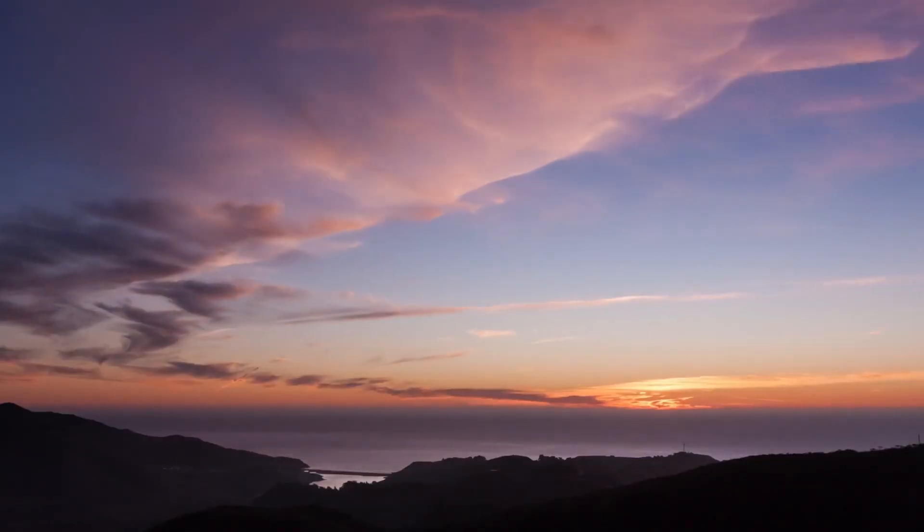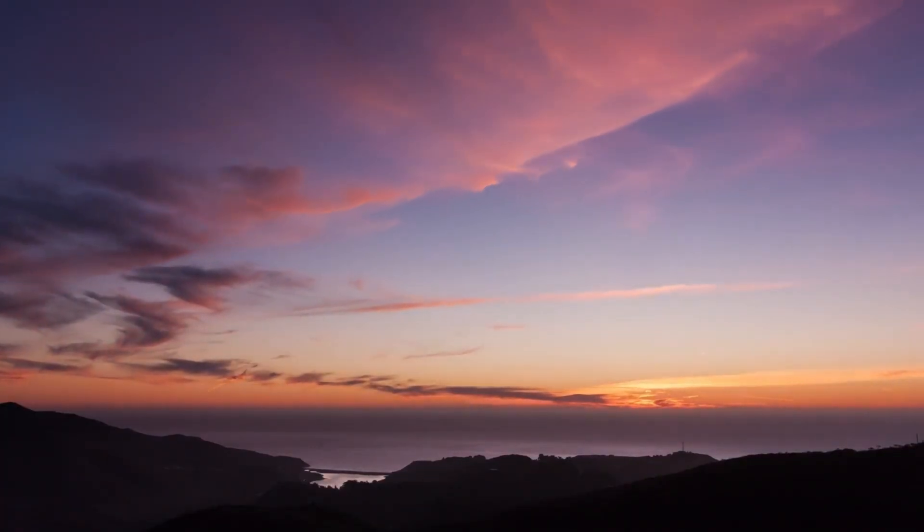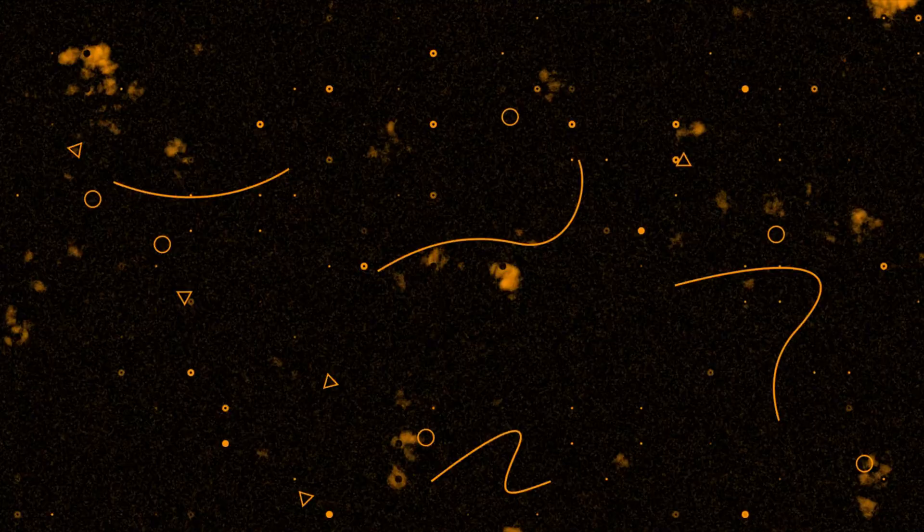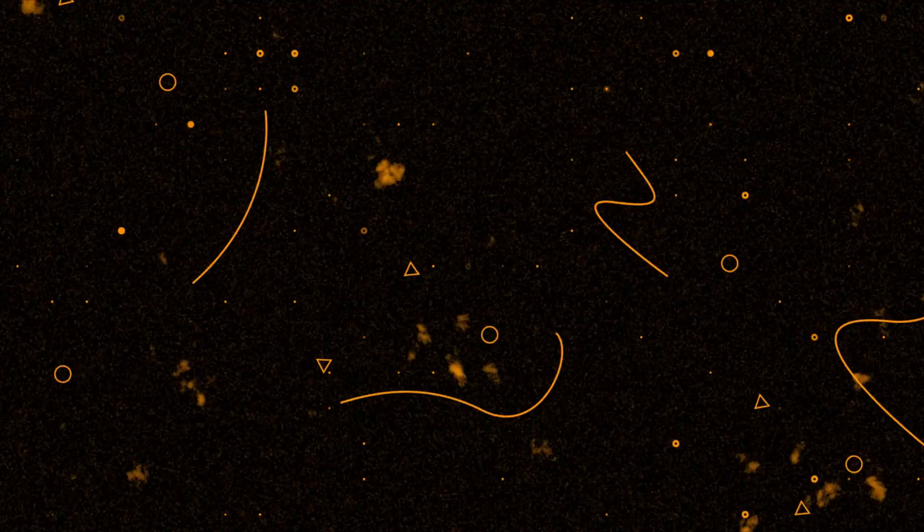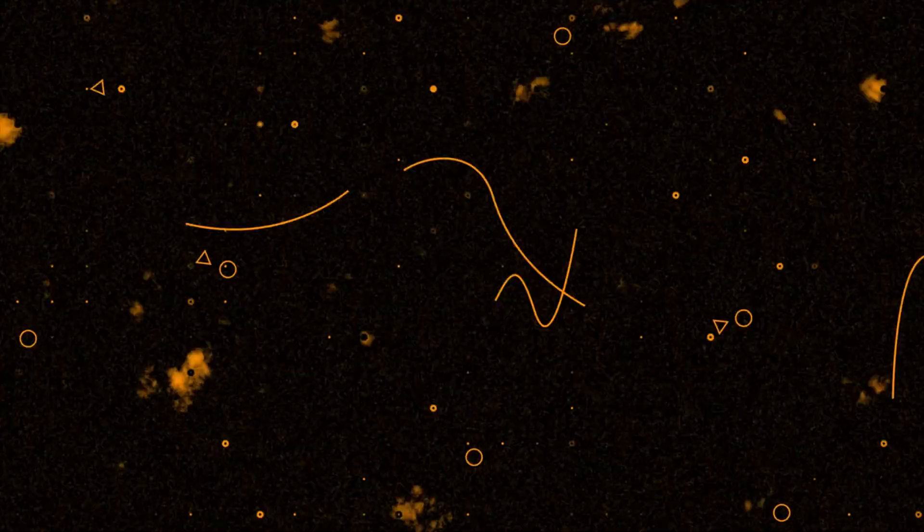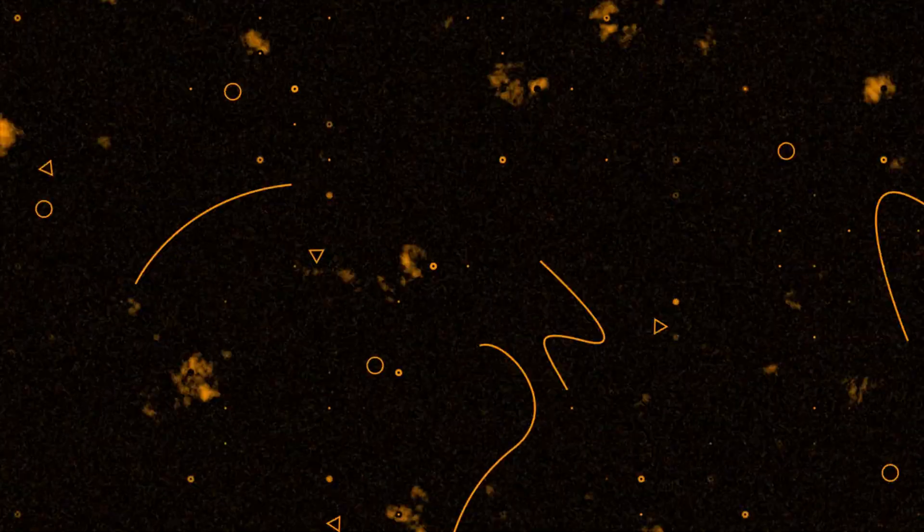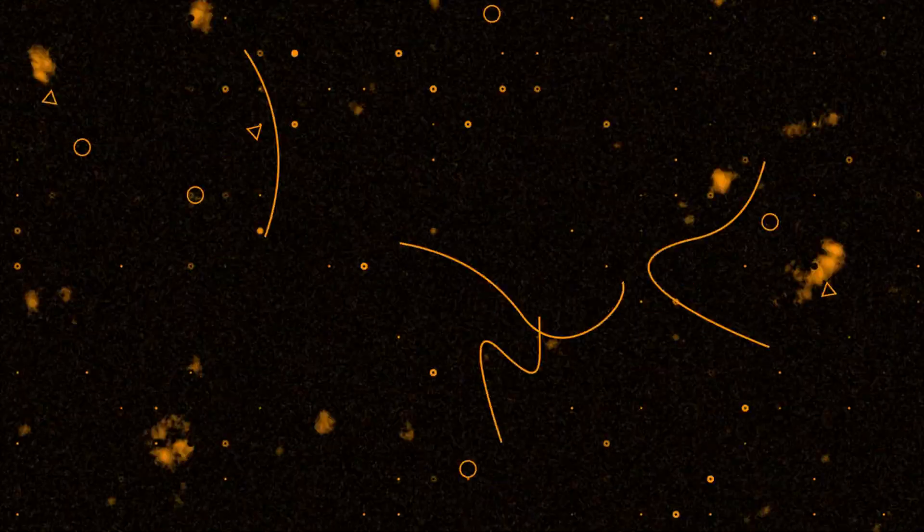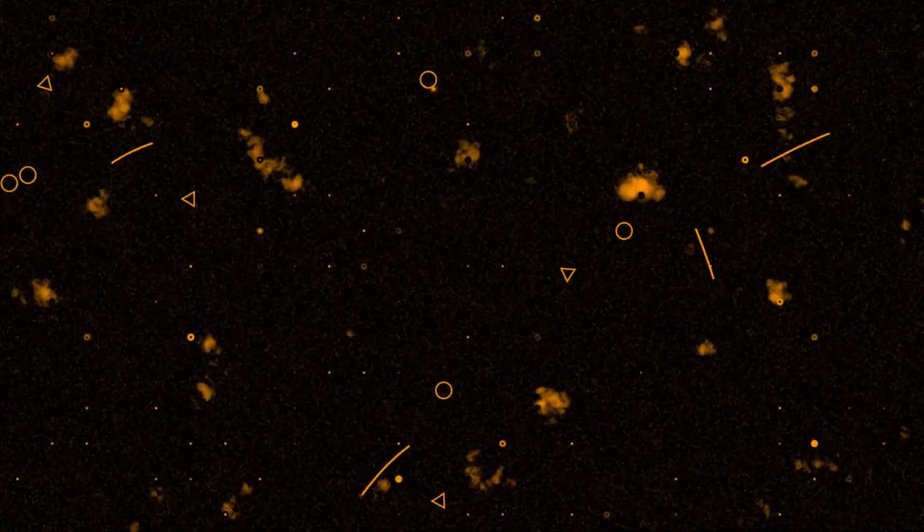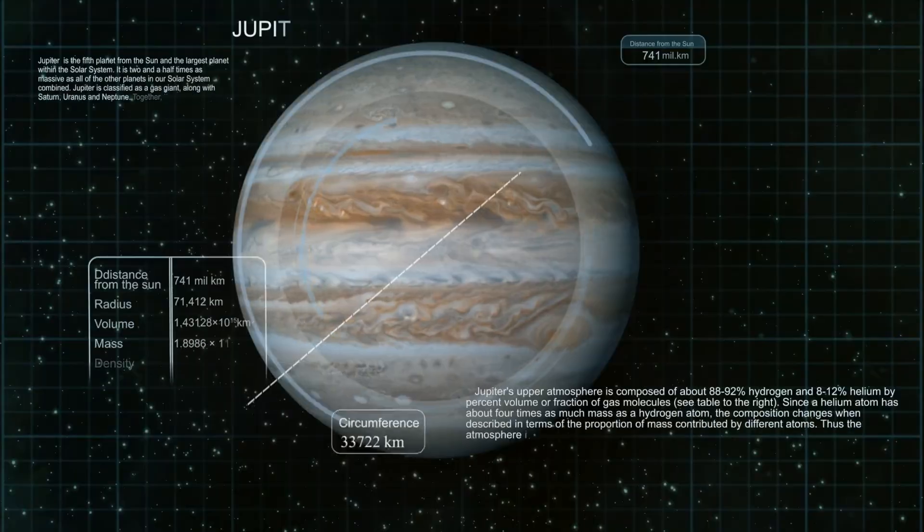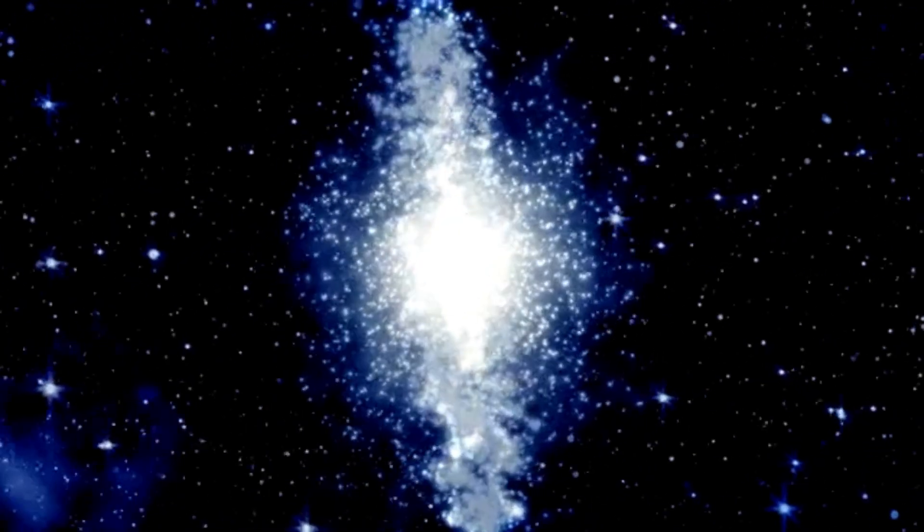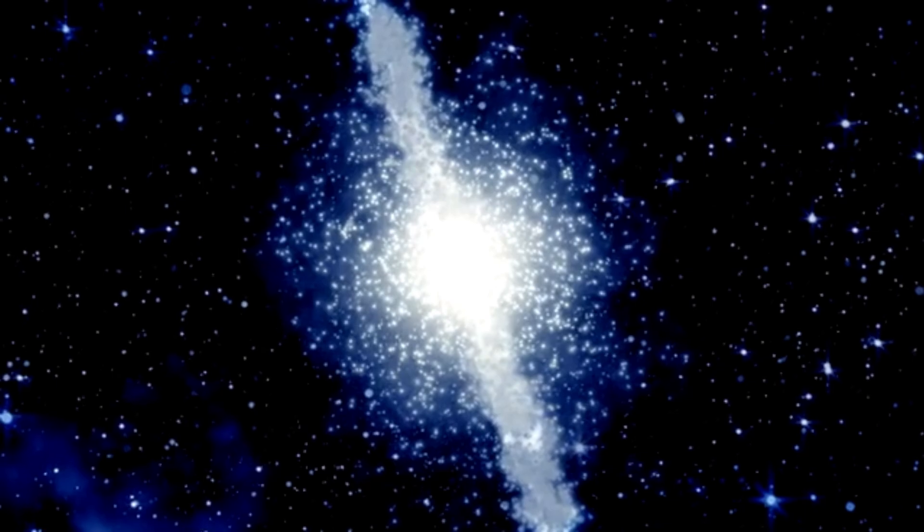Not through elaborate particle collisions or deep space gravitational wave detectors, but in something as grand and yet as visually poetic as the sky itself. Using data from the James Webb Space Telescope, scientists studying a distant galaxy cluster, known as RXJ-2129, may have stumbled upon what looks like the visual footprint of a cosmic string.